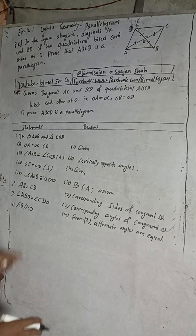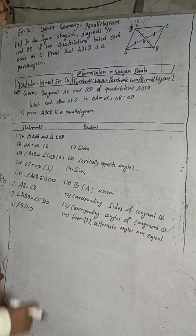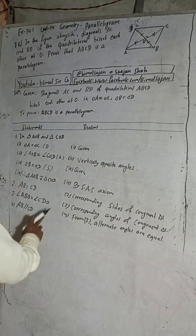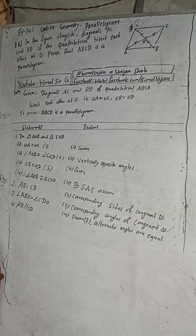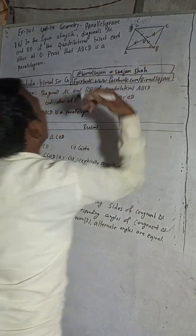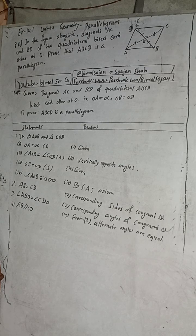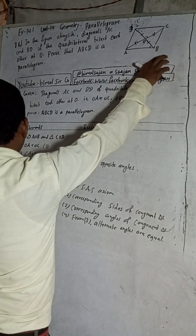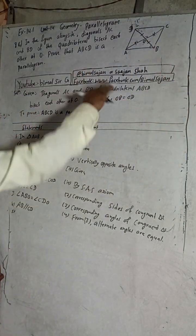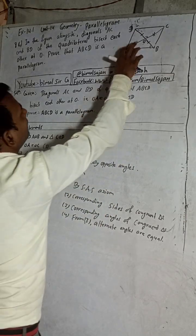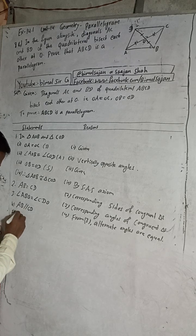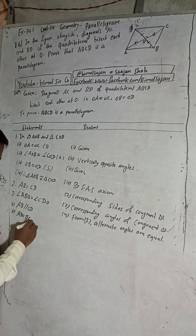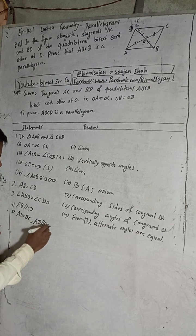If one pair of opposite sides of any quadrilateral are equal and parallel, then we can say it is a parallelogram. But for a complete proof, we also have to prove AD is equal to BC and AD is parallel to BC. So we need to show this as well.